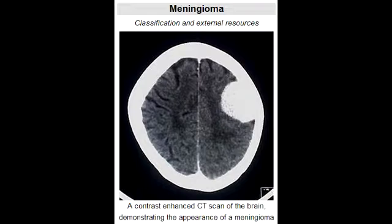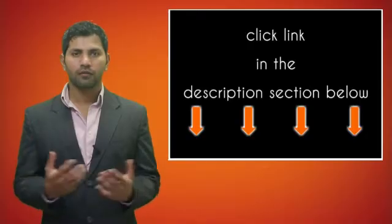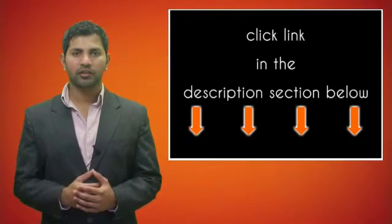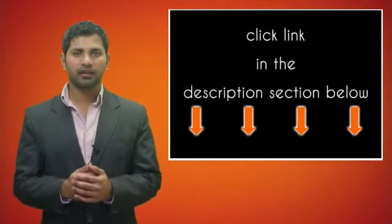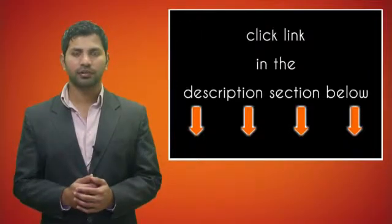Describe the histologic features of meningiomas. In meningiomas, cells are relatively uniform with a tendency to encircle one another, forming whorls and psammoma bodies. Psammoma bodies are laminated calcified concretions.